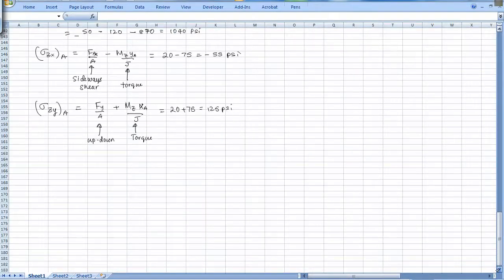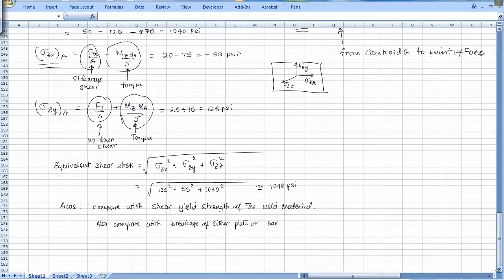Equivalent shear stress is just the magnitude of these three components. This is the magnitude of this vector: square root of sigma_zx squared plus sigma_zy squared plus sigma_zz squared. This should be compared to the shear yield strength of the weld material.